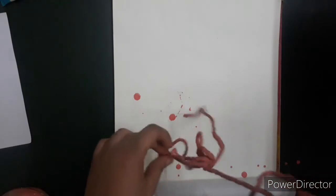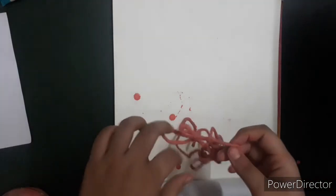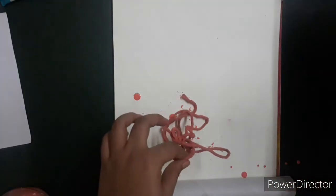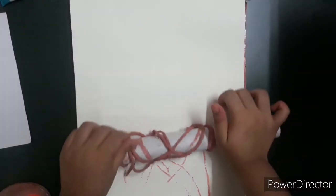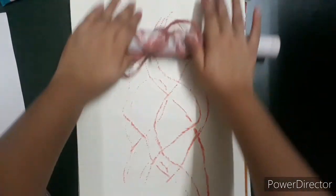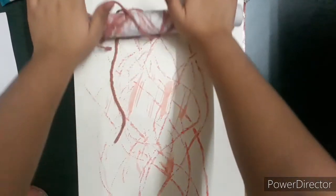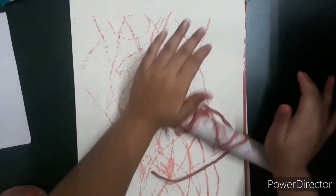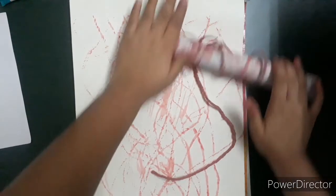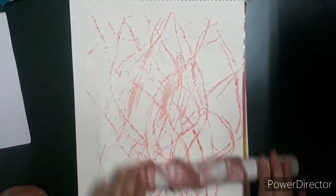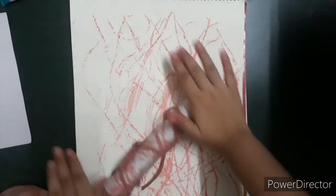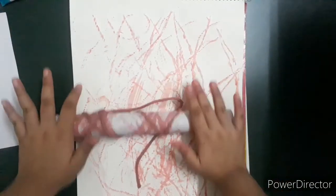And now we will cover the roller with this. Now we will start giving impression. My thread is a little bit open but it is ok.